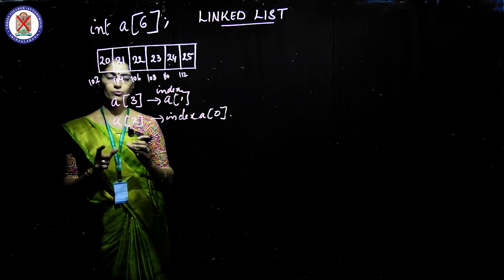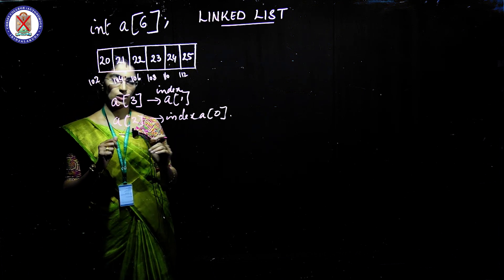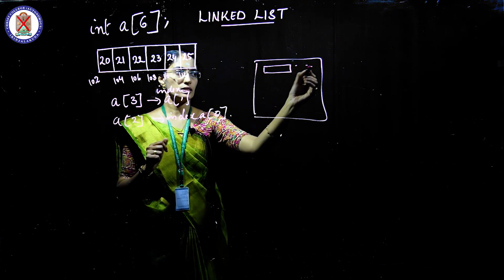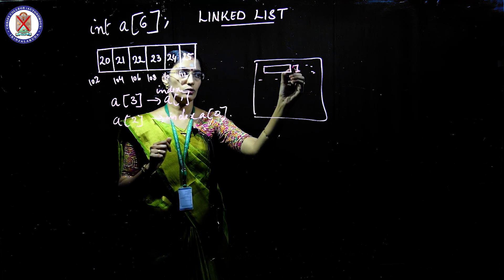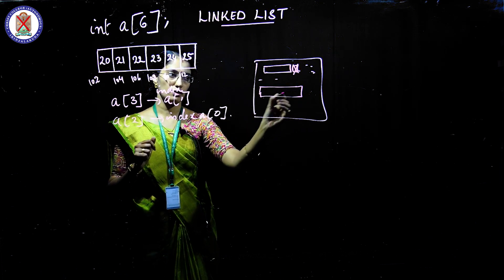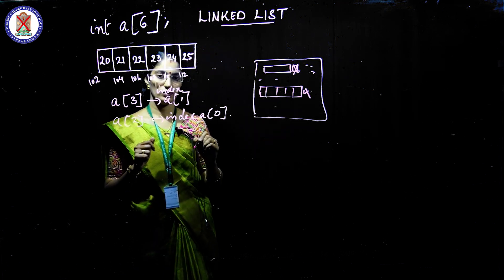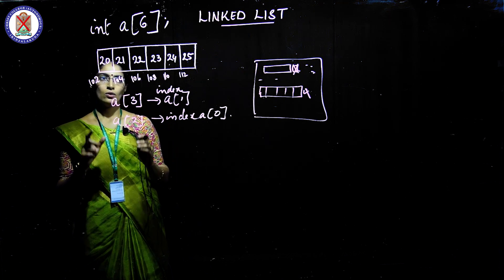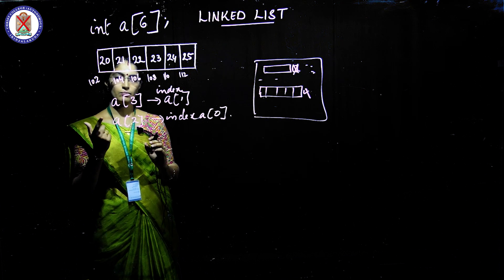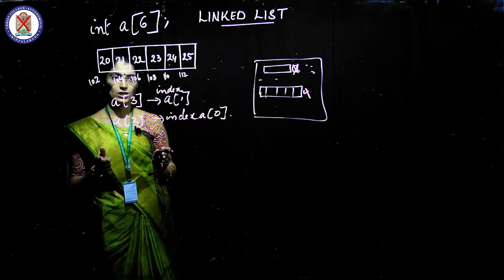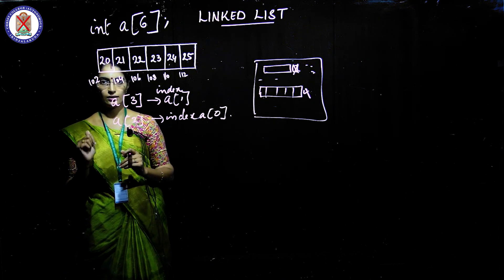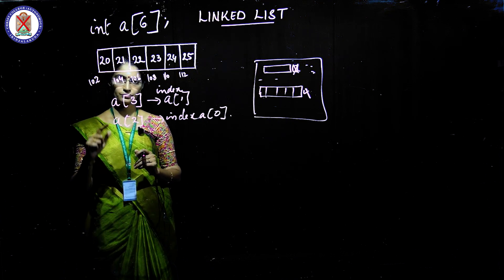Suppose the six elements have been allocated consecutively in memory. If other things are also allocated nearby and there is no space for a seventh element, the compiler has to look elsewhere. If the needed consecutive memory is not available, you get a message that allocation cannot be done. This is because arrays can only be allocated in consecutive memory locations — this is called static memory allocation, and it is the disadvantage of arrays.